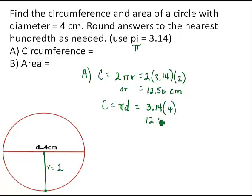then that would also give us 12 and 56 hundredths centimeters. So you can use either the 2 times pi times radius formula or the pi times diameter formula and the calculation is the same.